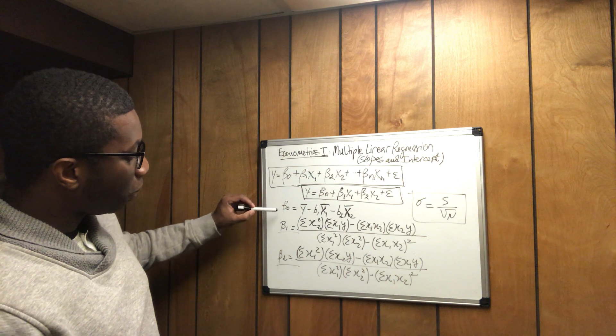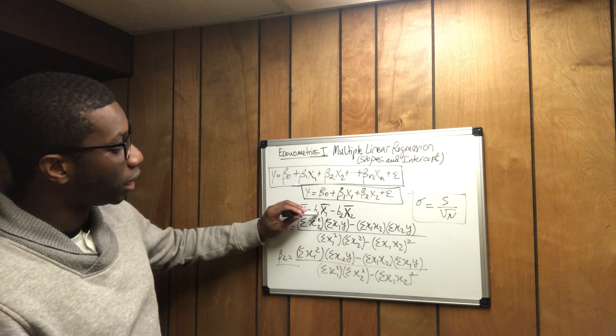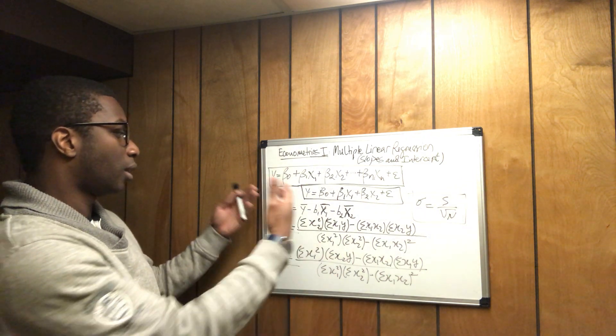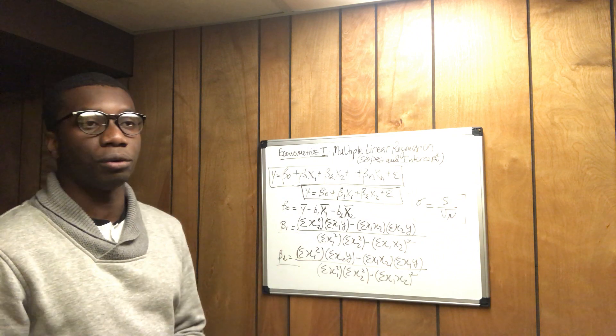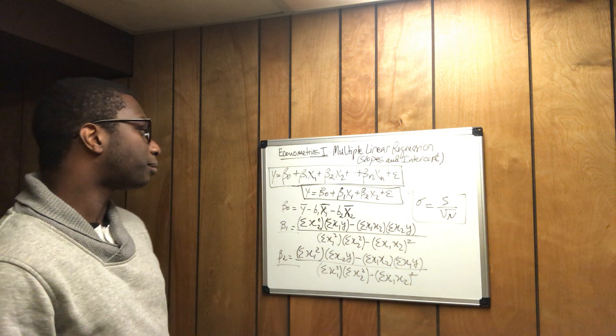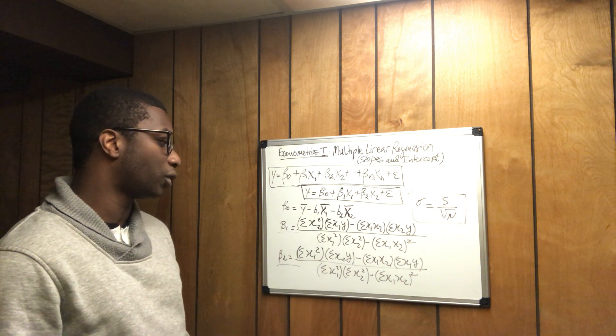So once you're able to determine the values of beta 1 and beta 2, you just plug them in this one. And you have the values of the intercept. And you can simply calculate your regression and make your prediction. So this is how basically you proceed.